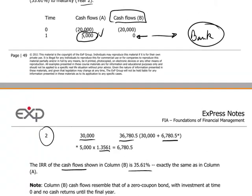It's also worth mentioning, with a nice tie-in to sources of finance and different types of instruments, that cash flow profile B is effectively similar to a zero-coupon bond — it pays nothing during its life, only at maturity, when a large lump sum is repaid to the investor. That profile would be typical of a zero-coupon bond.